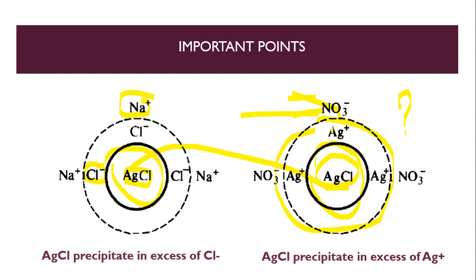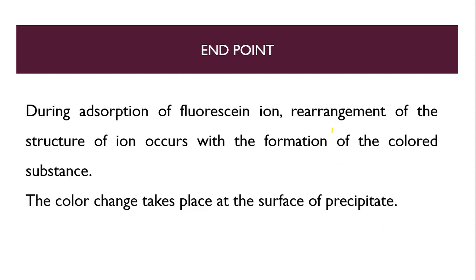That is why this is known as the adsorption indicator method or indicator adsorption method. What is the end point? During adsorption of the fluorescein ion, the rearrangement of the structure of the ion occurs with the formation of a colored substance — that is the pink color. So the color change takes place at the surface of the precipitate. This is the end point.